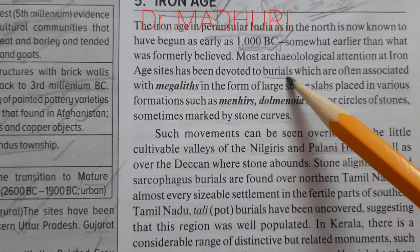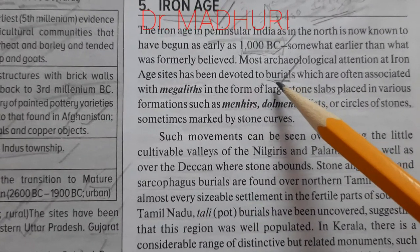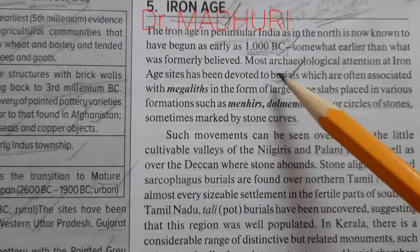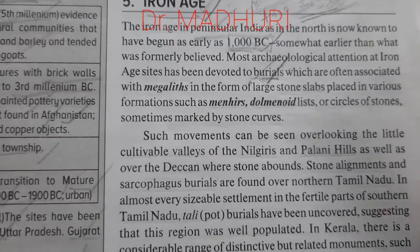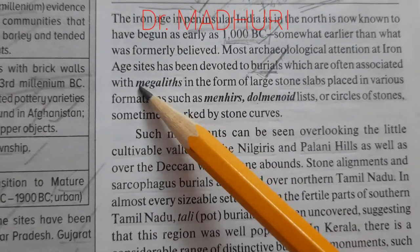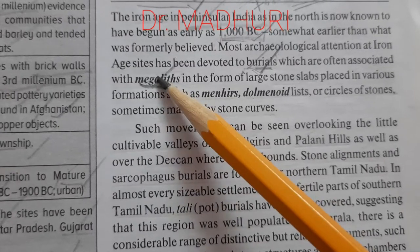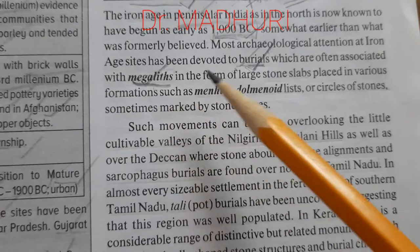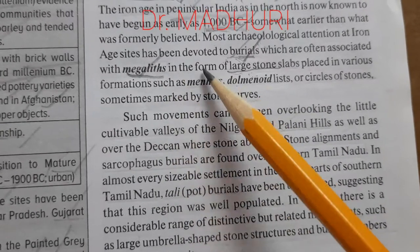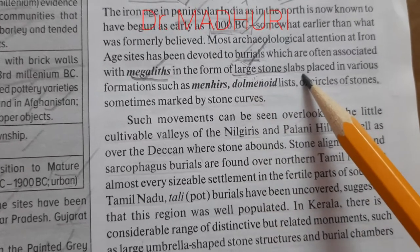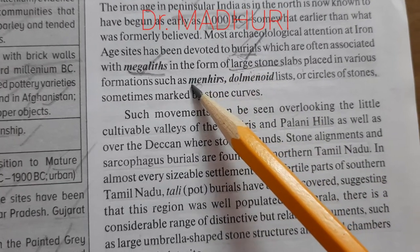Most archaeological attention at Iron Age sites has been devoted to burials. The burial places and things related to burials were all made with iron — that is what we have from archaeological excavations. These burials were often associated with megaliths — monumental things made out of stone. We find these megalithic sites in South India. Megaliths are large stone monuments or burials, while microliths are small stone things.